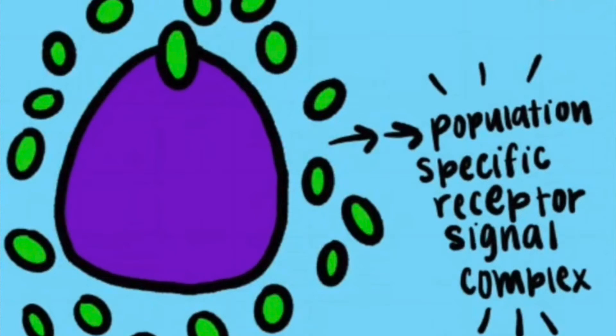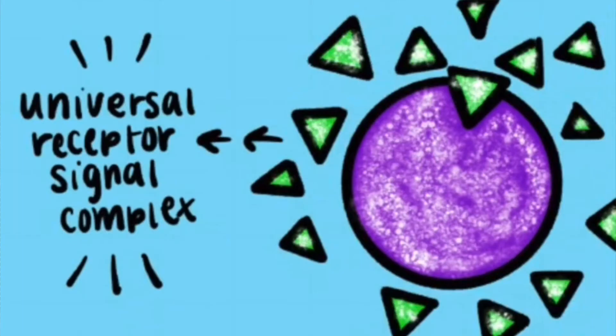A population-specific QSI, say for a toxic shock syndrome bacteria, would only inhibit the receptor for the toxic shock syndrome signal. This would prevent the bacteria from communicating with the rest of its population, thus stopping the bacteria from coordinating all at once to release the adverse effects. Another option is a non-population-specific QSI, which would jam the receptor that receives the general signal molecule for all bacteria and would be used as a broad-spectrum antibiotic.